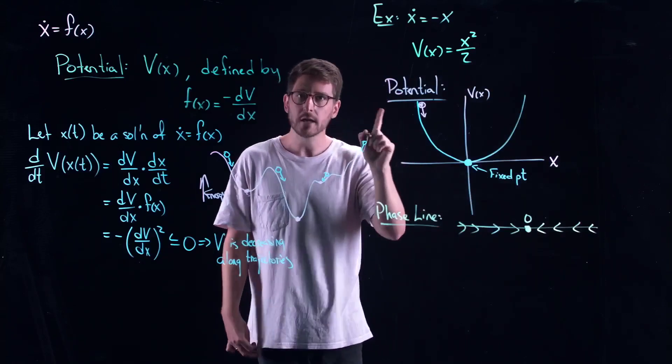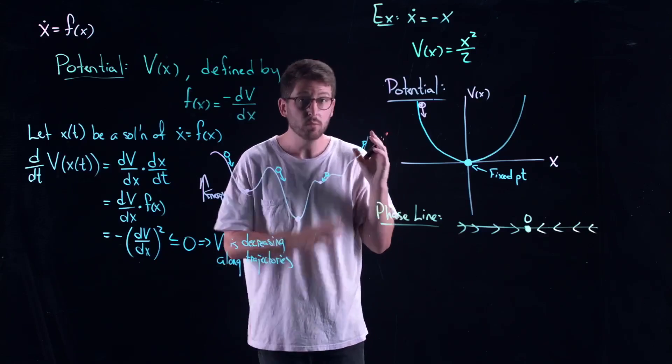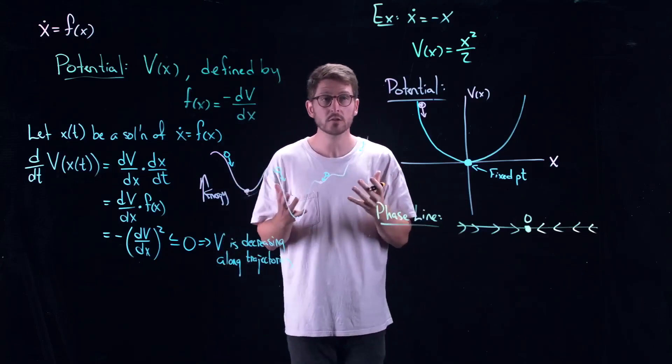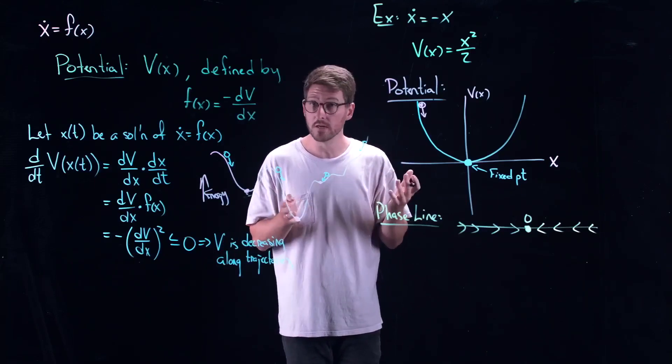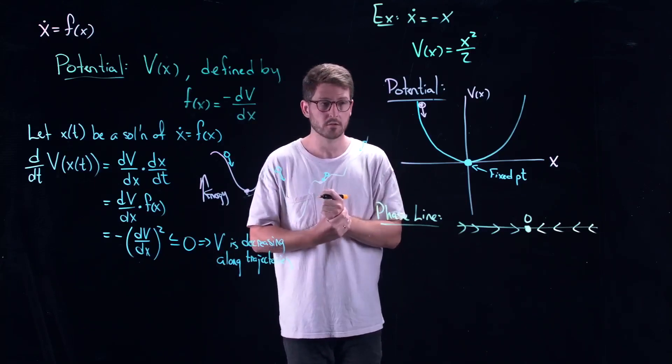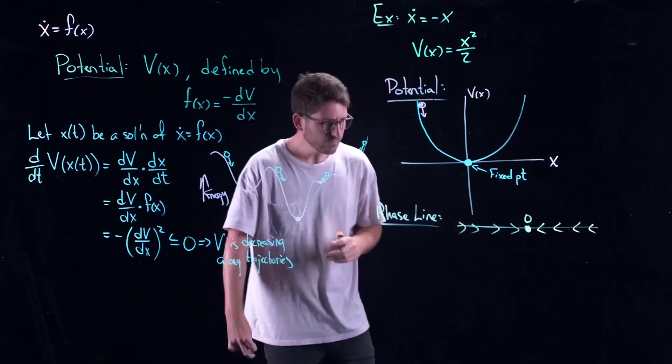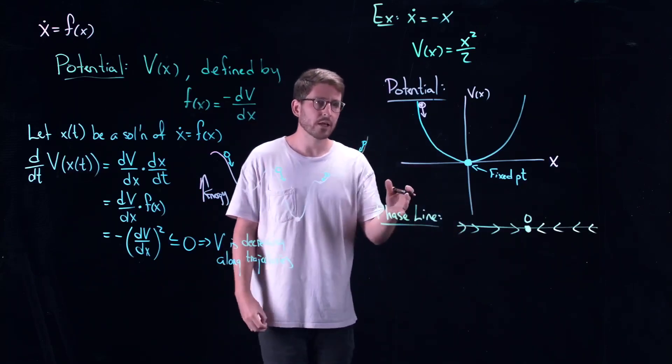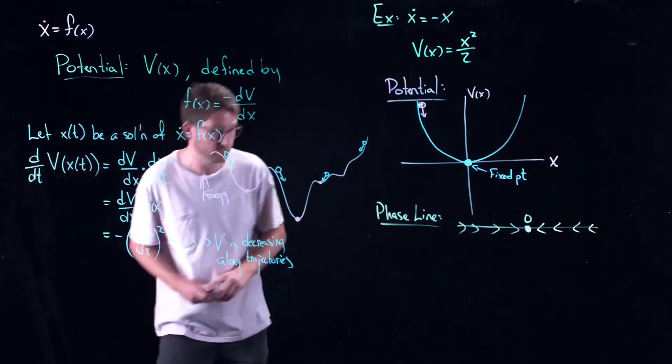The problem with the potential method is that it doesn't carry over well to higher dimensions. Okay. We will come back to it in two dimensions. Um. But it becomes a little bit more complicated. And you don't always have potentials in higher dimensions. Okay. So this is why I started with the phase line diagram. But nonetheless, you know, for these one dimensional problems, you can very much use these potentials as well.